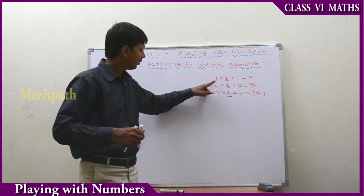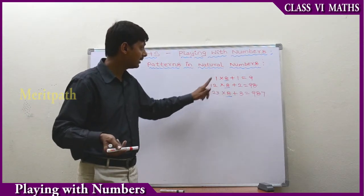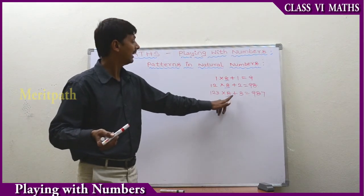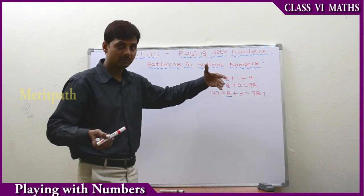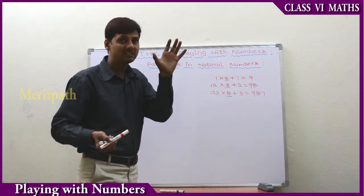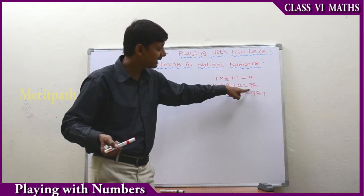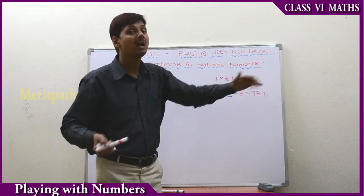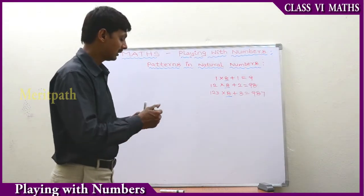So we are multiplying with 8 — 8 is common in all the numbers. The next natural number we multiply with 8, and we get a series of natural numbers. In the resulting part, we got 9, and after 9 the preceding number is 8, then 7 — it is in decreasing order of the natural numbers. So we are starting with 9. Let's see the next pattern.